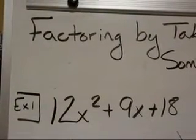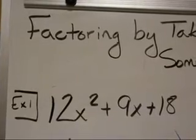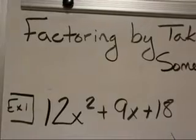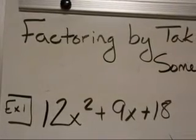Now look at the variables, x squared, x. Well wait, there's nothing on the 18. That means I can't pull out any variables. My greatest common factor then is just 3.